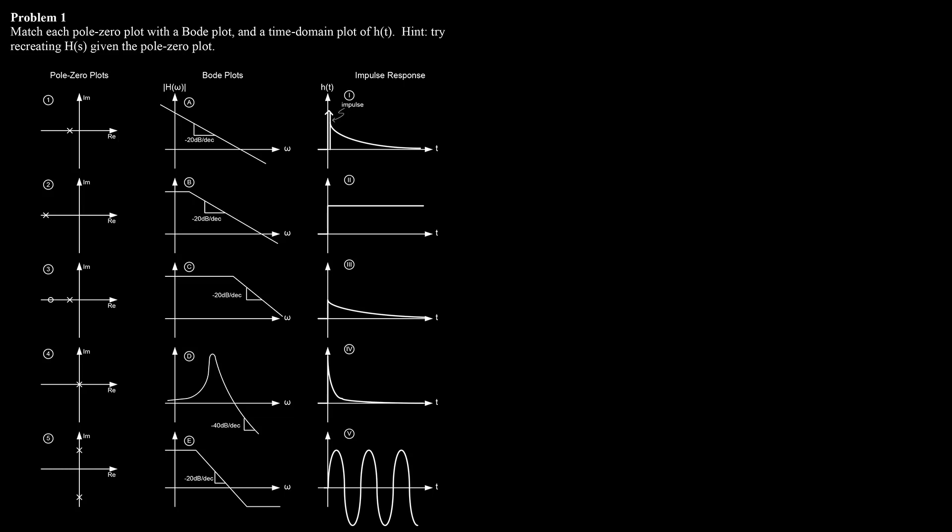The left column, the pole zero plot column, is a way of describing the system transfer function, H. H is a polynomial in S. It might look like this, for instance. The roots of the numerator are called zeros.